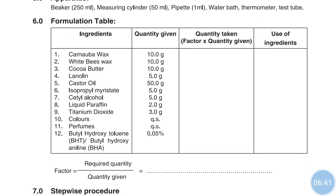Now see the formulation. Here we have to prepare four lipsticks total. First we will calculate the factor. The quantity required: BHT (butyl hydroxytoluene) is given as 0.05 percentage, so the required quantity is 5 divided by 100. Our factor is 0.05. Multiply that, so 0.05 into 10, and calculate the quantities of each ingredient accordingly.